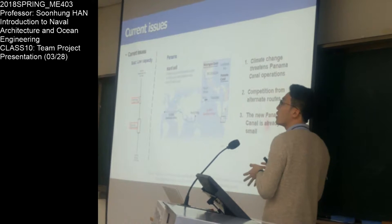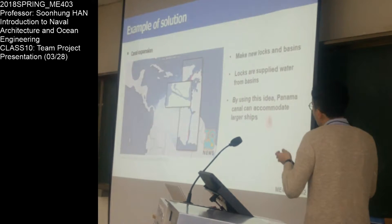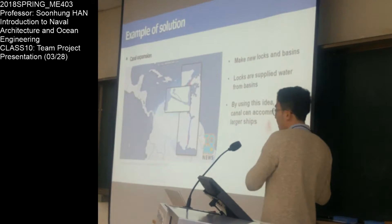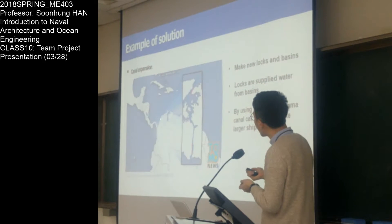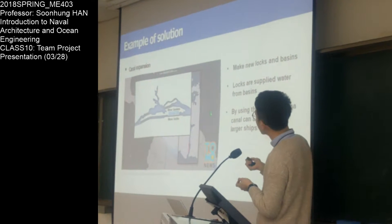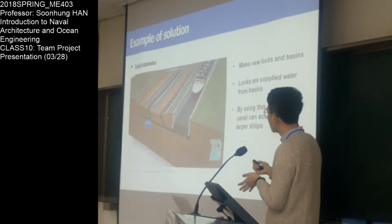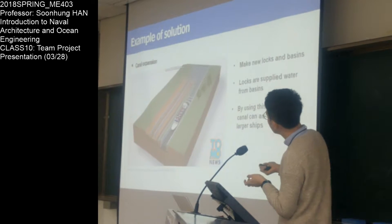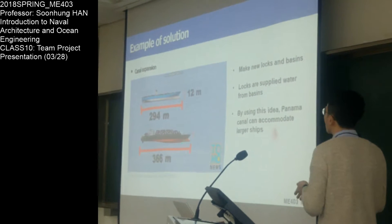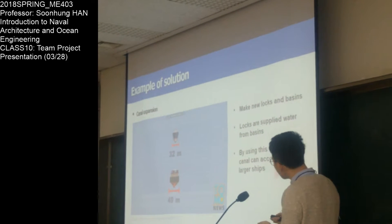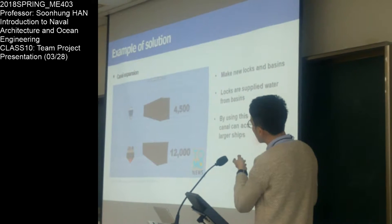The Suez Canal has a capacity problem and the Panama Canal has a size problem. Canal expansion is one solution. We can make new basins and locks, and the locks are first filled with water from the basins. By using this idea, the canal system can optimize its operations. The upper diagram shows the past design and the lower one shows the latest.